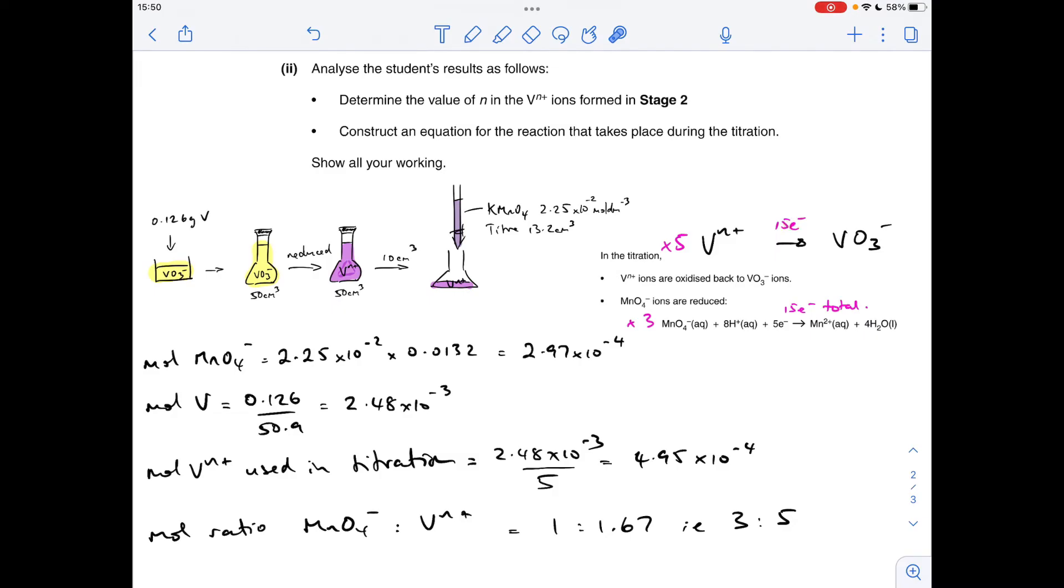We know that the vanadium's going back to its plus-five oxidation state. So if it's losing three electrons, it's starting out as V²⁺.